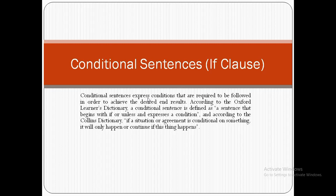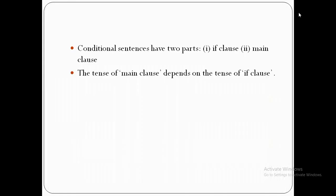According to the Oxford Learner's Dictionary, a conditional sentence is defined as a sentence that begins with 'if' or 'unless' and expresses a condition. According to the Collins Dictionary, if a situation or agreement is conditional on something, it will only happen or continue if this thing happens. So conditional sentences have two parts: the if-clause and the main clause. The tense of the main clause depends on the tense of the if-clause.